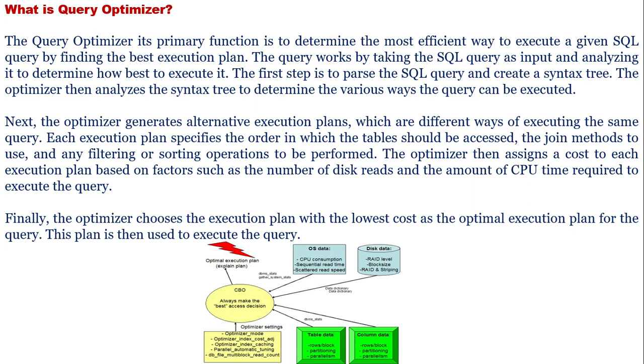The query optimizer's primary function is to determine the most efficient way to execute a given SQL query by finding the best execution plan. It works by taking the SQL query as input and analyzing it to determine how best to execute it. The first step is to parse the SQL query and create a syntax tree. The optimizer then analyzes the syntax tree to determine the various ways the query can be executed.